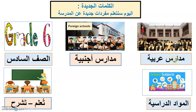So again all the words: مدارس عربية — Arabic school. مدارس أجنبية — foreign school. الصف السادس — grade 6. المواد الدراسية — school subject. تعلم or تشرح — teach or explain. Now somebody create a sentence: أنا في الصف السادس وأنا أتعلم المواد الدراسية في المدارس الأجنبية. Excellent! And again: أنا أتعلم المواد الدراسية في المدارس الأجنبية.